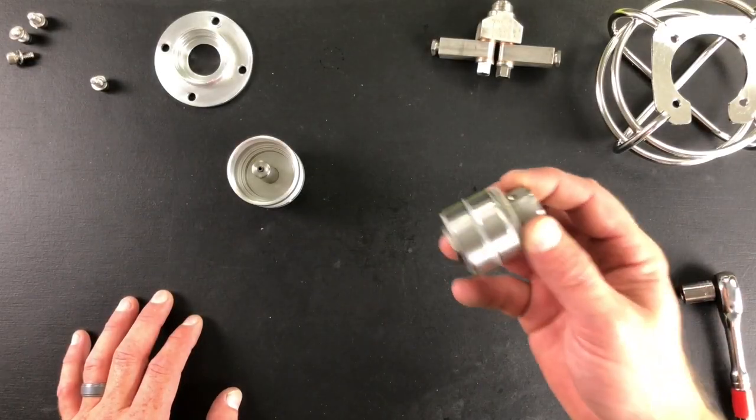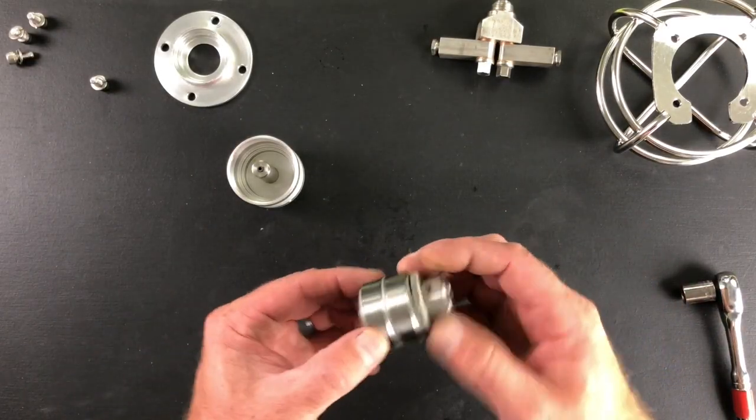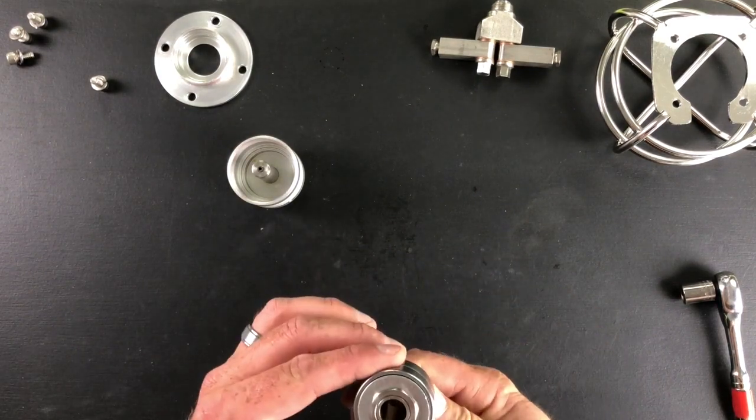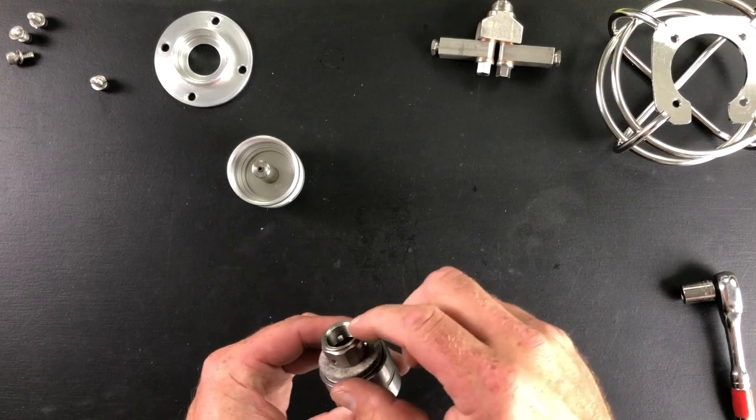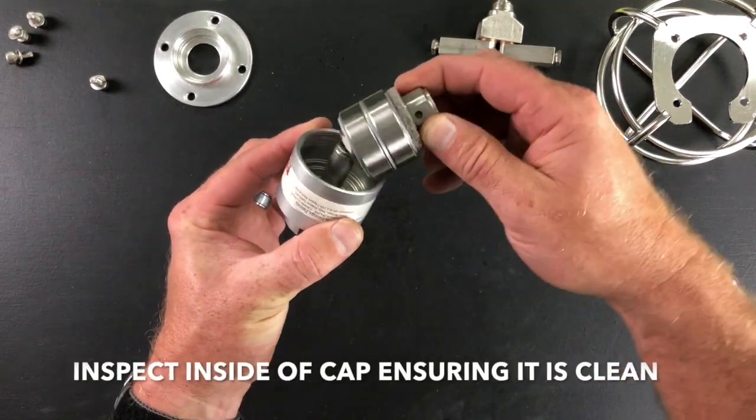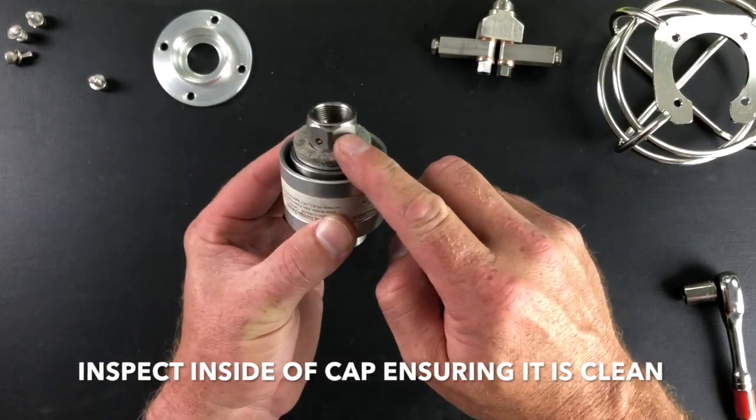Step three, reinstalling shaft and bearing assembly. When reinstalling your shaft and bearing assembly, always check to ensure the bearings are in free and operating order. Spin the shaft freely, making sure there's no grit or grime holding it up or causing it to seize. Then simply drop it into the cap.